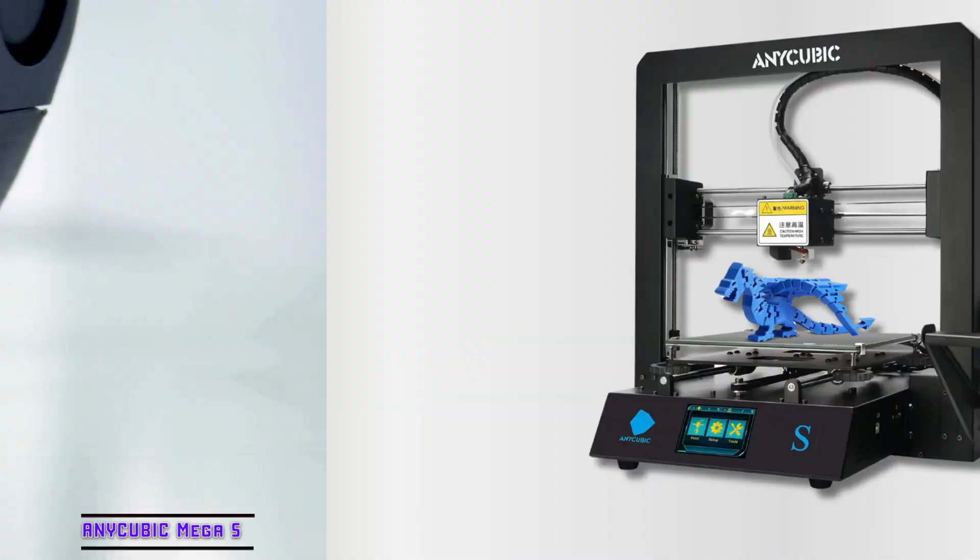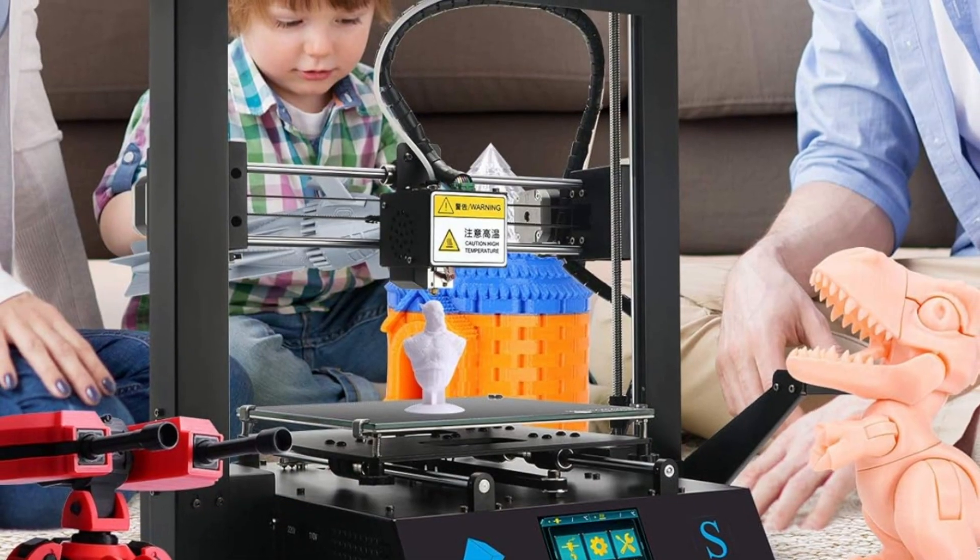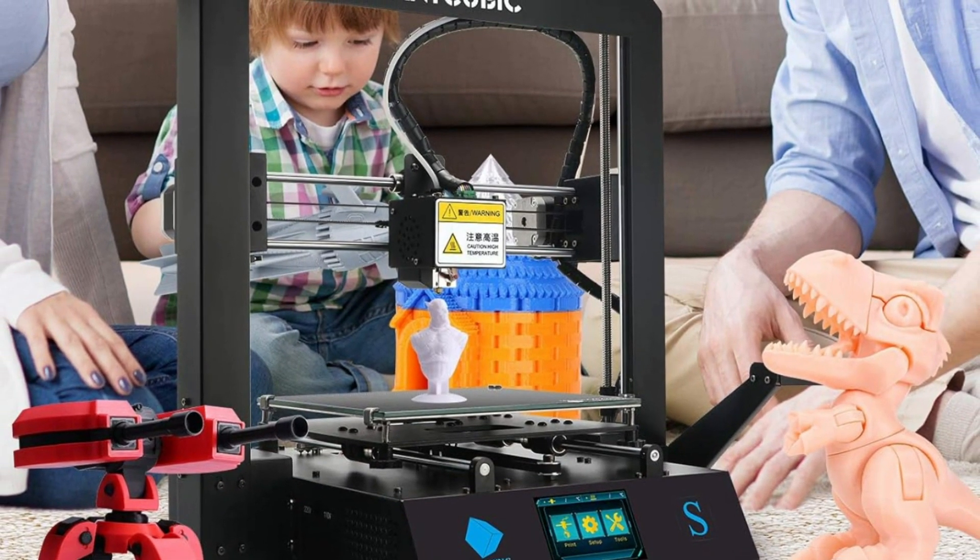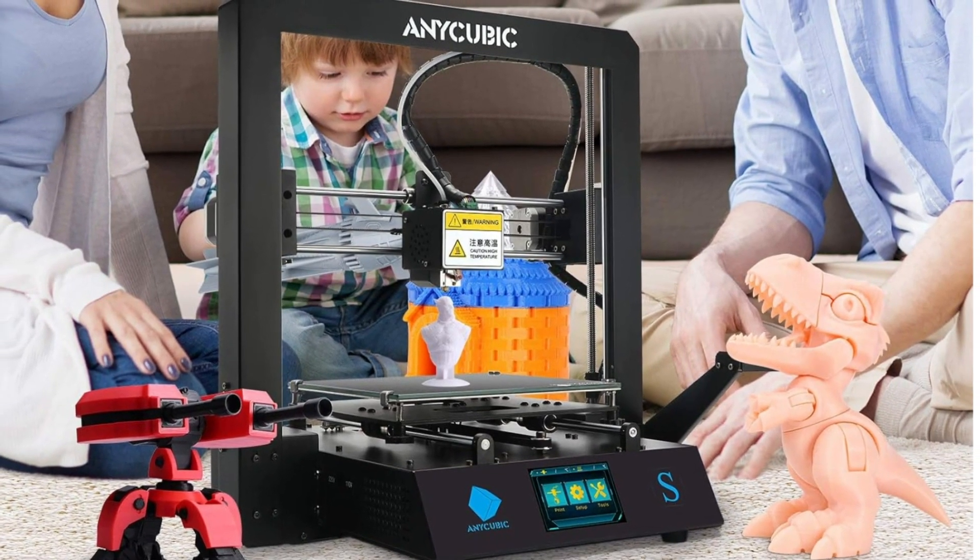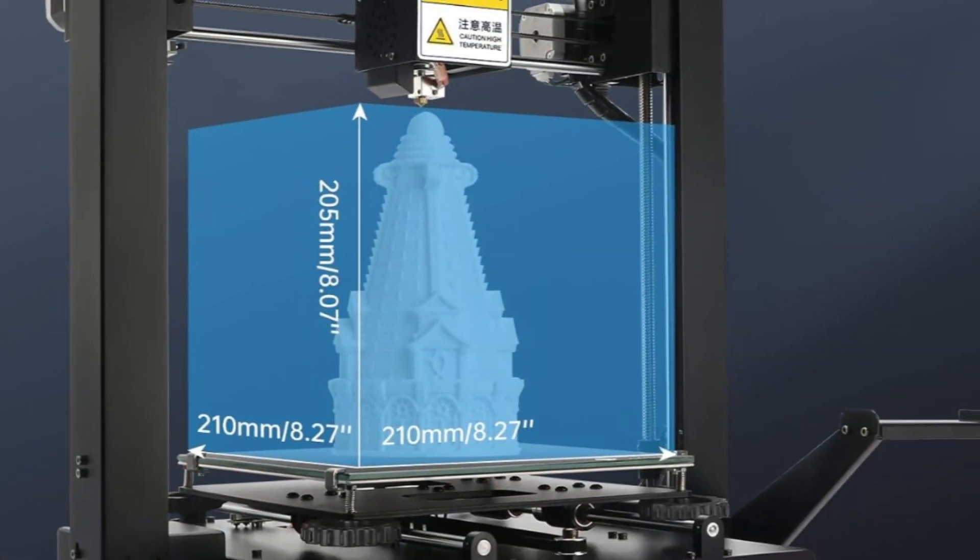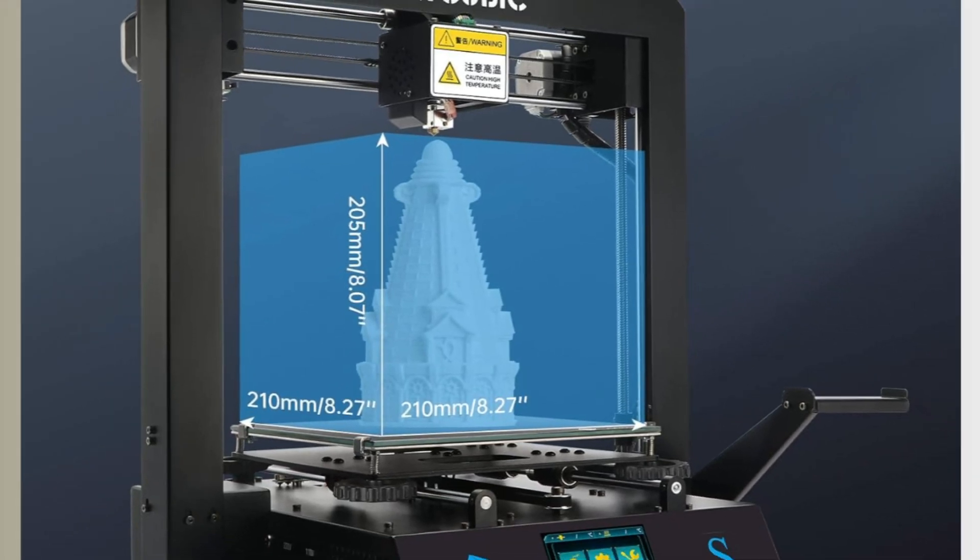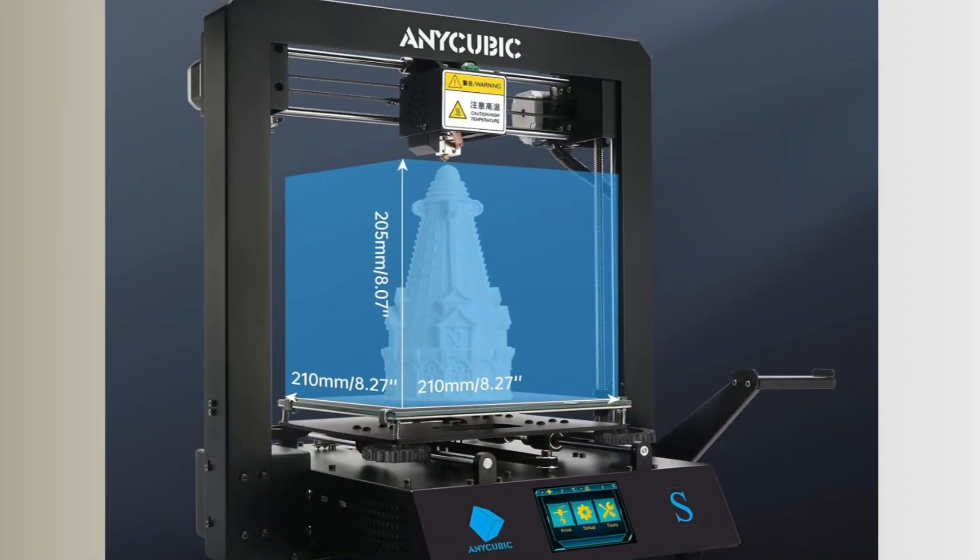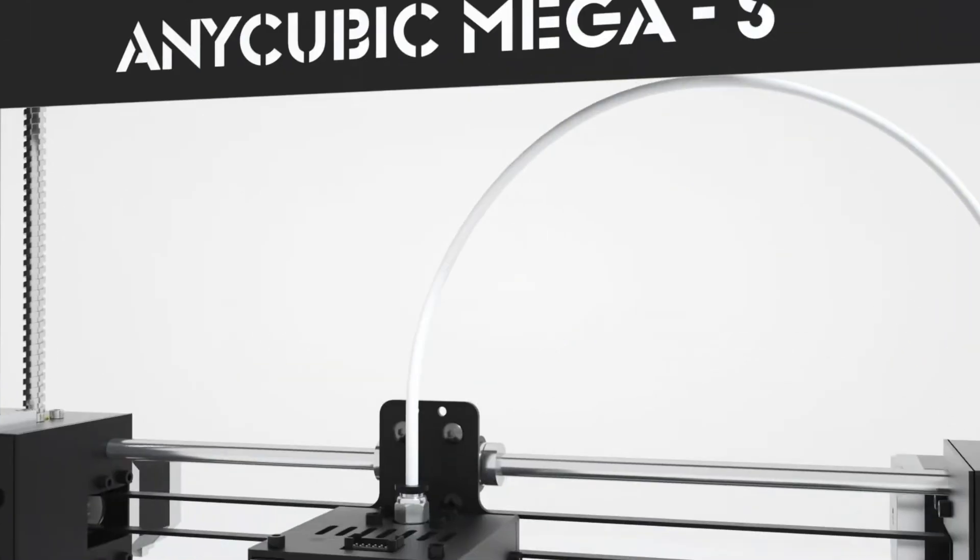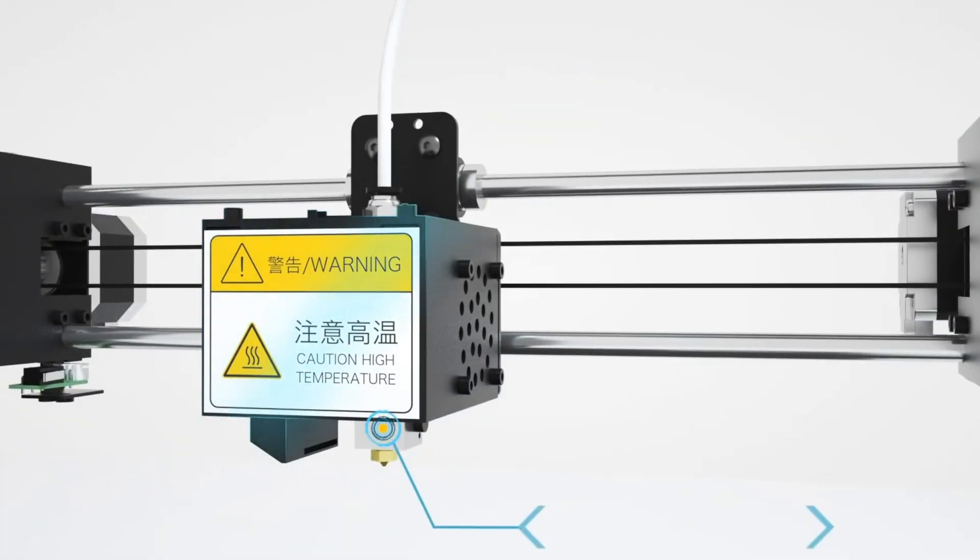At number 4, it's Anycubic Mega S. The Anycubic Mega S is a versatile and user-friendly FDM 3D printer that excels in precision and ease of use. This printer offers a print volume of 210mm by 210mm by 205mm, suitable for various projects. Setting up the Mega S is straightforward, requiring only three steps with eight screws and three cables, making it accessible for both beginners and expert users.